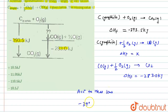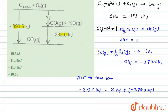According to Hess's Law: minus 393.5 kilojoule equals x kilojoule plus minus 283.0 kilojoule. Solving for x: x equals minus 393.5 minus (minus 283.0), giving x equals minus 110.5 kilojoule. So the missing enthalpy of formation is minus 110.5 kilojoule.